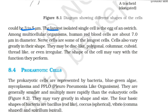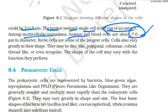The largest isolated single cell is the egg of an ostrich. Human red blood cells are about 7.0 micrometers in diameter. Nerve cells are the longest cells.